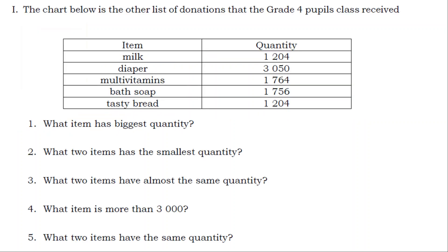What I can do. The chart below is the other list of donations that the grade 4 pupils class received. Item and quantity. Milk 1,204. Diaper 3,050. Multivitamins 1,764. Bath Soap 1,756. Tasty Bread 1,204.